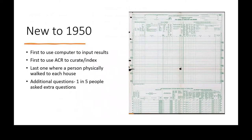So what's new in 1950? The 1950 census was the first census to use a computer to input results. They used OCR — optical character recognition — to curate and index. They went ahead and tried to use that input to create indexes.